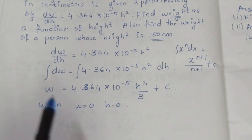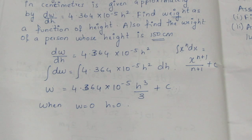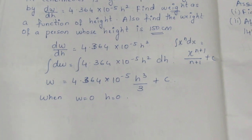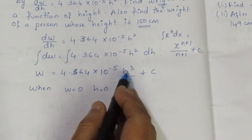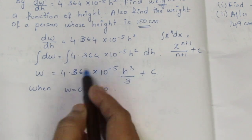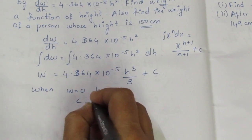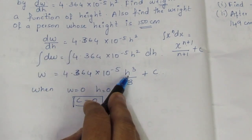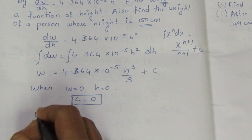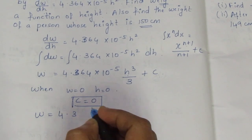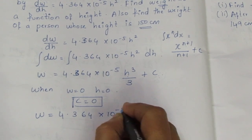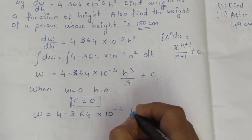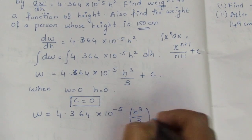When W = 0 and H = 0, substituting into the equation gives 0 = 4.364 × 10⁻⁵ × 0 + C, so C = 0. Therefore the general equation is W = 4.364 × 10⁻⁵ × H³/3.